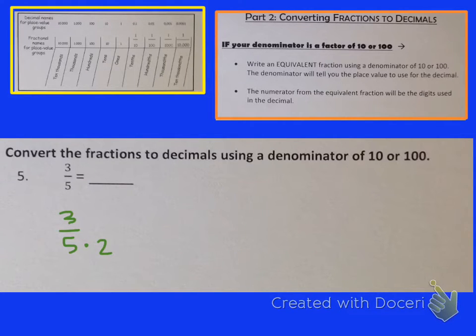So I'm going to do 5 times 2 at the bottom of my fraction. But whatever I do to the denominator has to be done to the numerator as well. So I also have to do 3 times 2. So when I do this, I have 3 times 2, which is 6, over 5 times 2, which is 10. And now I have 6 tenths.